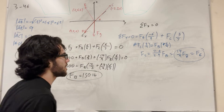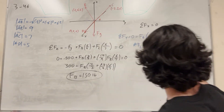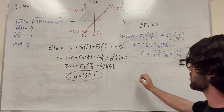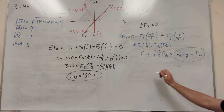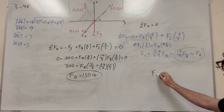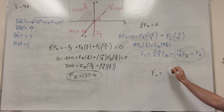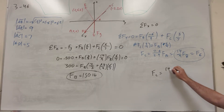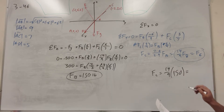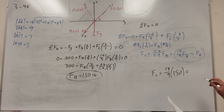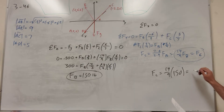Now let's figure out force C. Using the ratio we found, force C equals fourteen over nine times force B, which is 150. So force C equals fourteen over nine times 150, which gives force C equals 233 pounds.